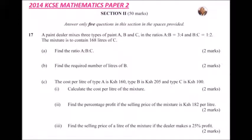Question number 17, the first question in section 2. A paint dealer mixes three types of paint A, B, and C in the ratio A:B = 3:4 and B:C = 1:2. The mixture is to contain 168 liters of C. Part A: find the ratio of A:B:C. Part B: find the required number of liters of B. Part C: the cost per liter of type A is 160 Kenyan Shillings, type B is 205, and type C is 100. Calculate the cost per liter of the mixture, find the percentage profit if the selling price is 182 per liter, and find the selling price if the dealer makes a 25% profit. That adds up to 10 marks.